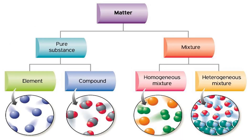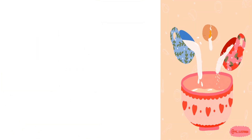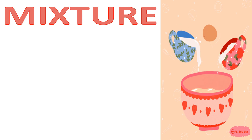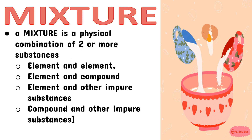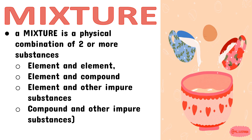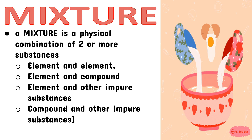The second classification of matter is mixture. It is further classified into homogeneous mixture and heterogeneous mixture. While a compound is formed by the chemical combination of two or more elements, a mixture is a physical combination of two or more substances. It can be an element and another element, element and compound, element and other impure substances, or compound and other impure substances.